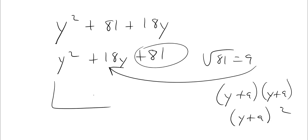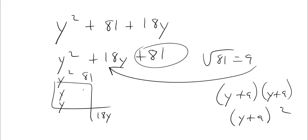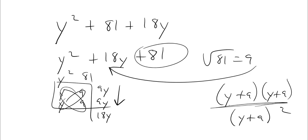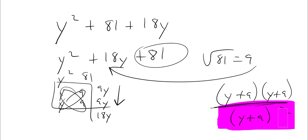Let's just do a factor box quickly to show you: it's y squared, 81, 18y. So you get y and y, and 81 is 9 and 9, and they're both positive. So you get 9y and 9y, which adds together to give 18y. So y plus 9, y plus 9 — your final answer is y plus 9 quantity squared.